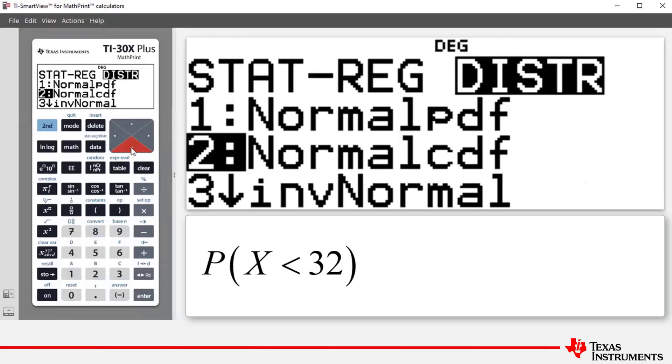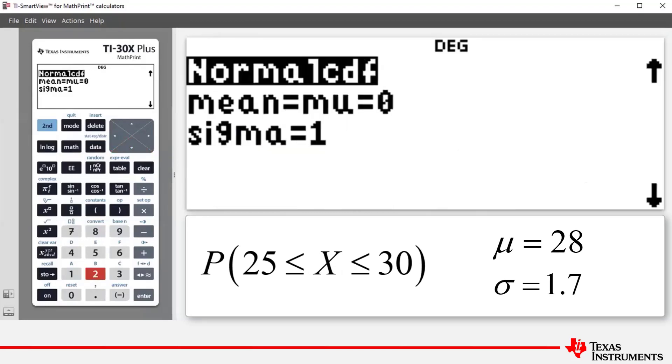Let's access the normal CDF command, so we'll press 2 and data, which takes us to the normal CDF setup. What we want to do now is enter the mean, which is μ, and our μ is 28, and our σ is 1.7. So we arrow down and then we enter 1.7.